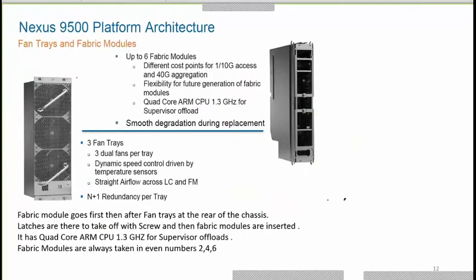The Nexus 9500 has three fan trays with dynamic speed control driven by temperature sensors. As the system heats up, the fan speed increases, and decreases as it cools down. You can configure N+1 redundancy for the fan trays.